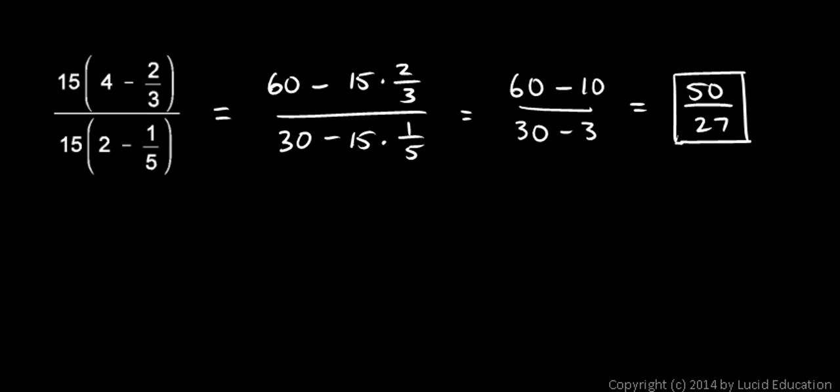So that's two different techniques. You can carry out the operations first and then do the division. Or you can multiply the numerator and the denominator by the least common denominator of these little fractions. Either approach will get you the same answer.